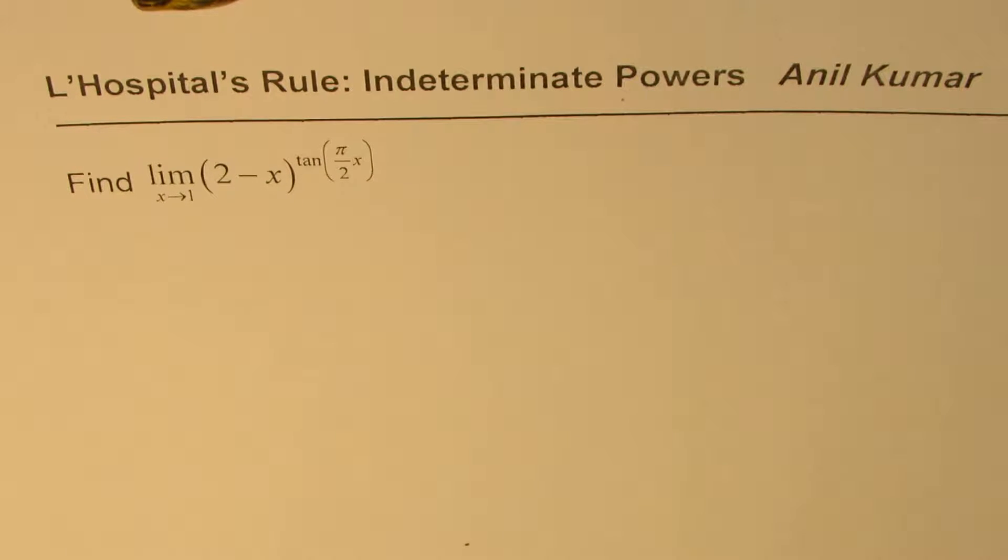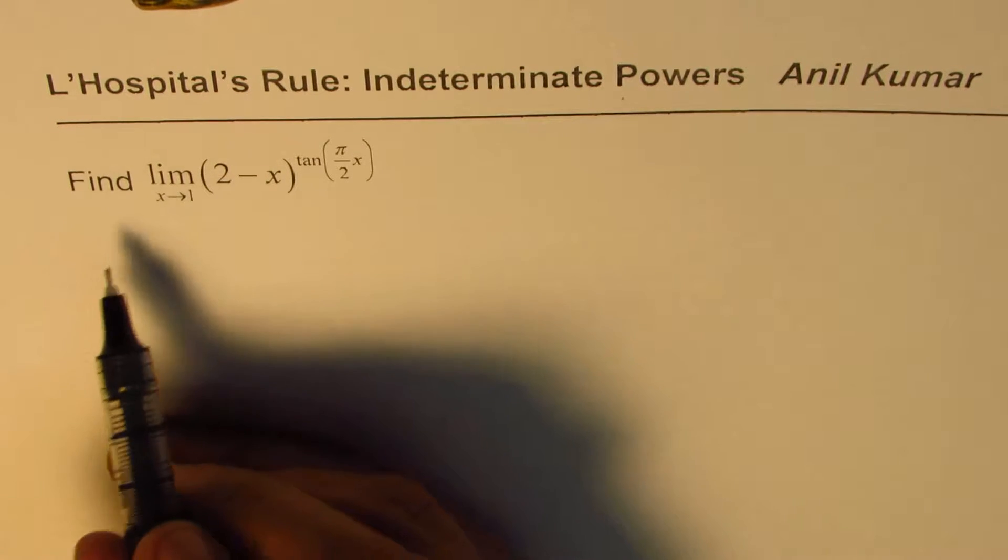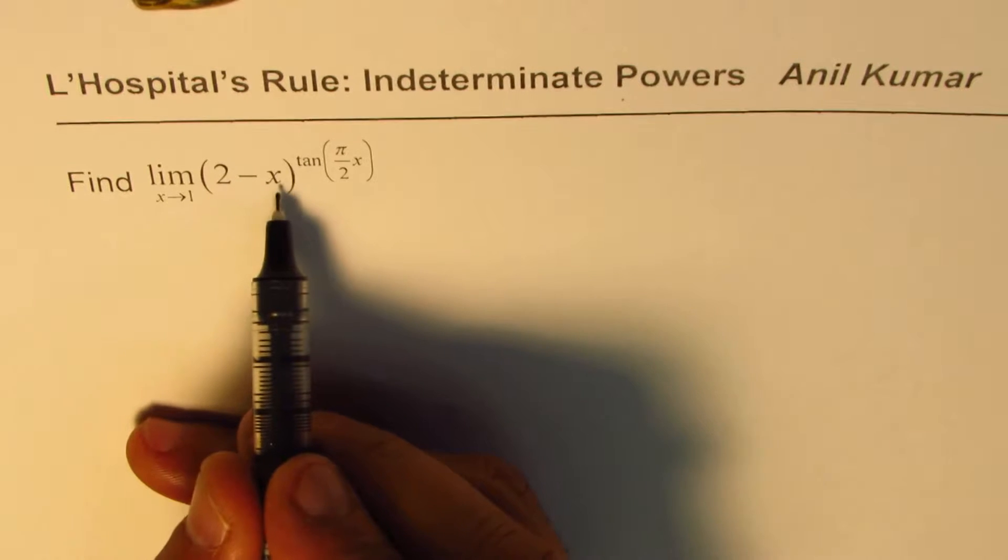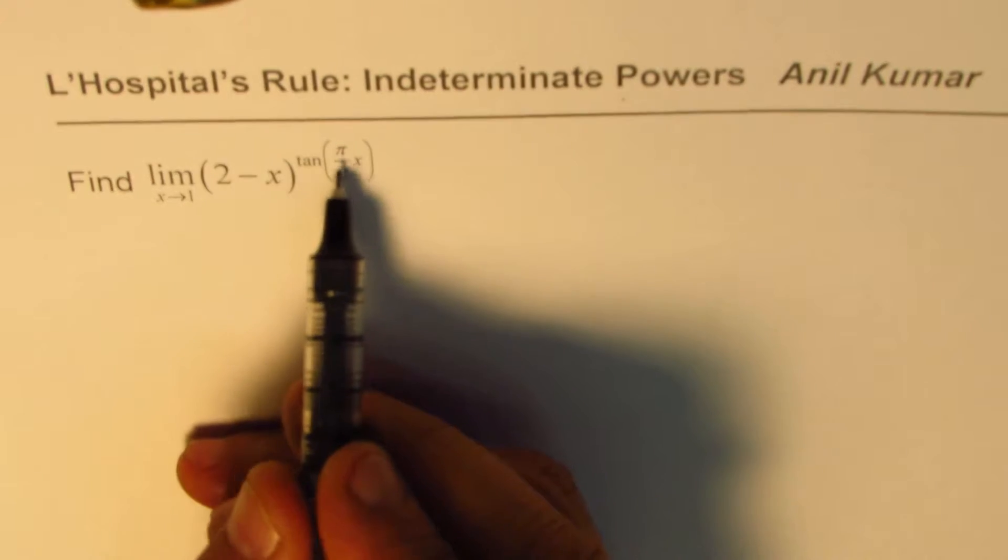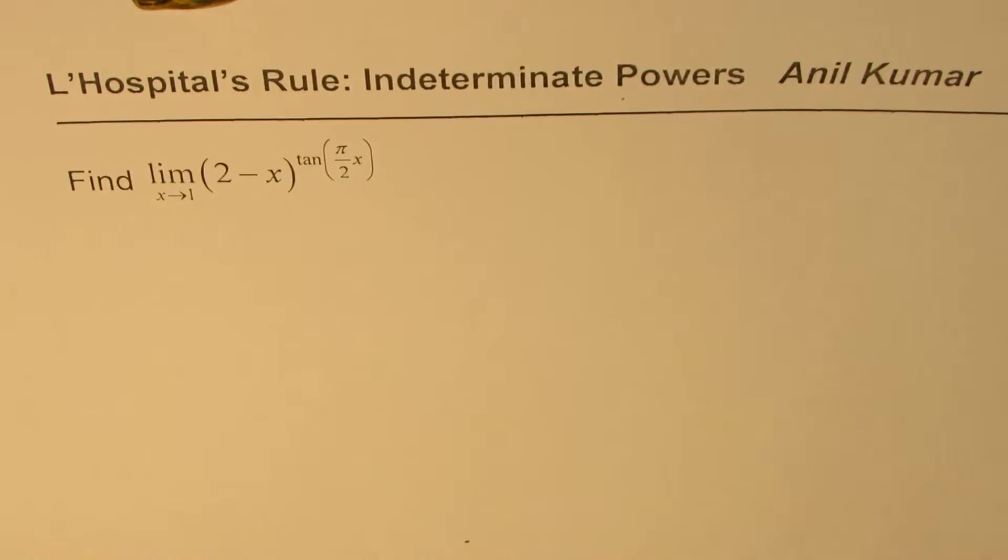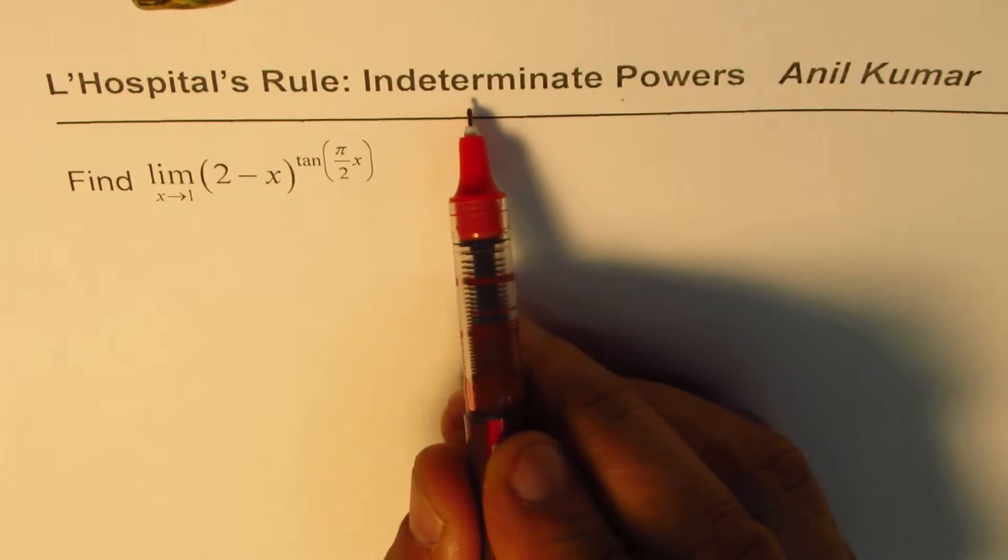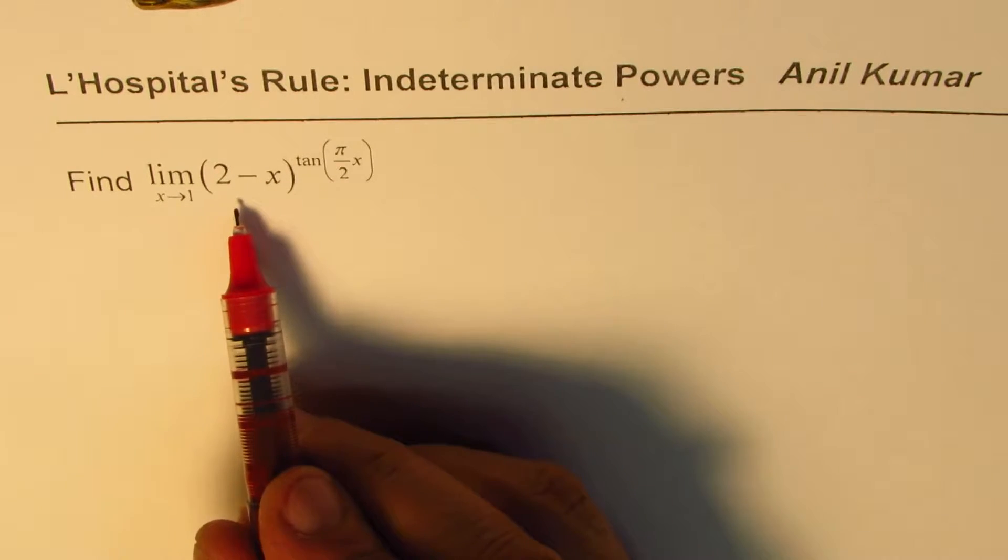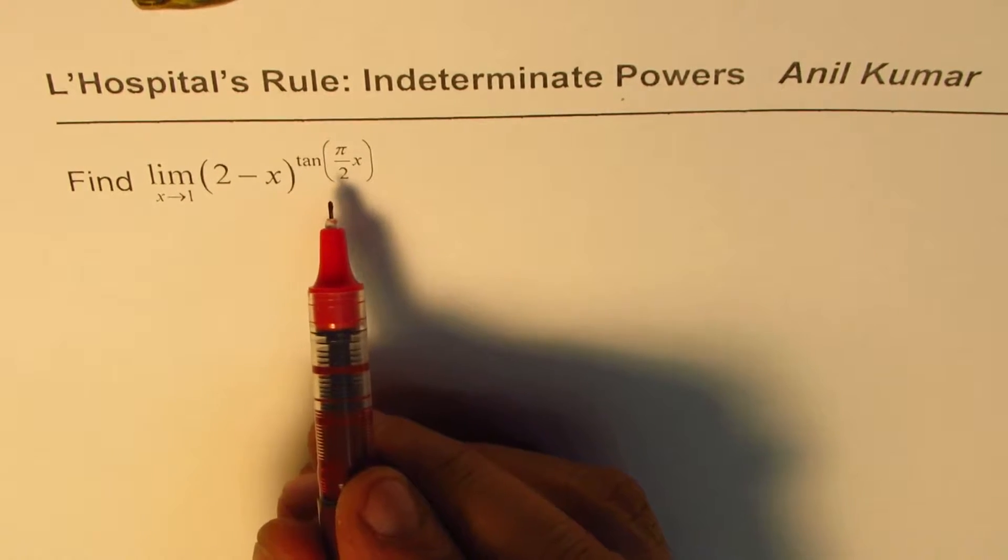I'm Anil Kumar, sharing with you a test question on indeterminate powers which is going to be solved using L'Hôpital's rule. The question here is: find limit as x approaches 1 for (2-x) to the power of tan(πx/2). Now here we have some exponent, so that means we are looking for indeterminate powers. Let us first check whether it is indeterminate power or not.